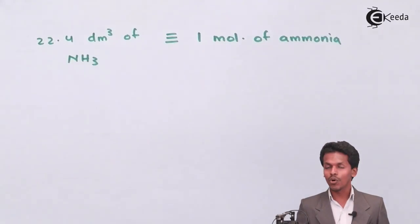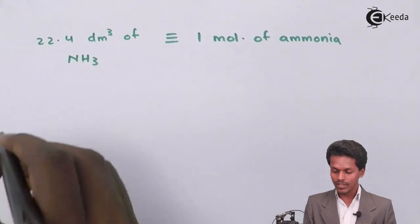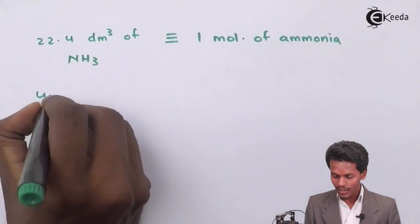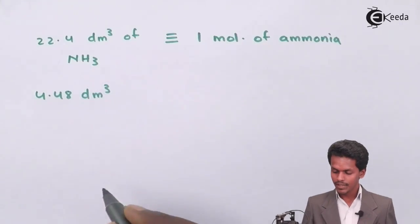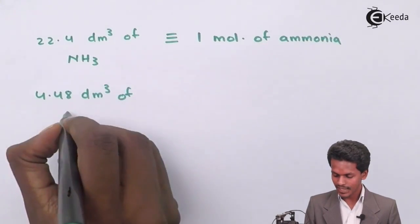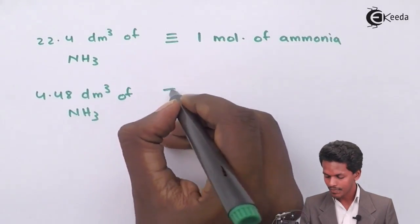It will occupy one mole of ammonia. Talking about the next thing that they have provided to us, that is 4.48 dm³ of ammonia, that is of NH₃.